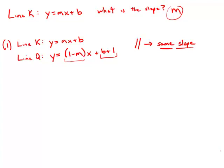So the slope of k would equal the slope of q: m equals 1 minus m. That would allow us to solve for m, which is what the question is asking. So statement number one is sufficient. It would allow us to solve for the numerical value of the slope.